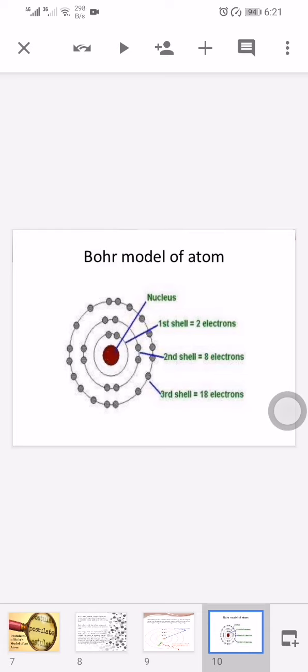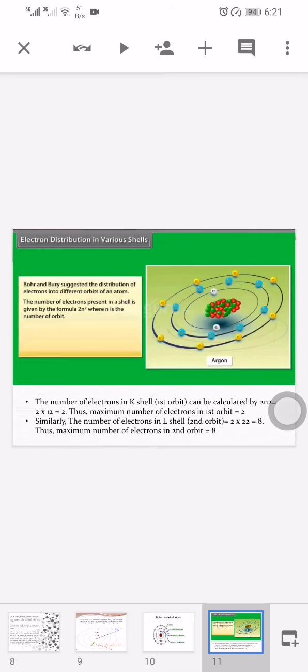The orbitals continue to increase in a similar manner. The next is distribution of electrons in orbits or shells. Electronic distribution of various orbits or energy levels can be calculated by the formula 2n², where n denotes the number of orbits.